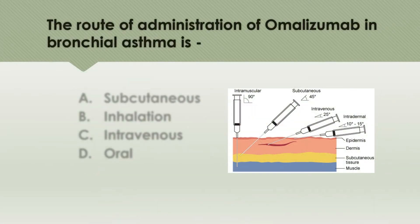The route of administration of omalizumab in bronchial asthma is subcutaneous — not inhalation, intravenous, or oral. Omalizumab is a humanized monoclonal antibody against immunoglobulin E, which is administered subcutaneously in severe allergic asthma. It is a very expensive drug.